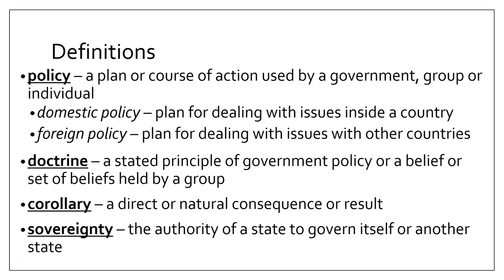The Monroe Doctrine is really going to focus on foreign policy. Doctrine is a stated principle of government policy, or a belief or set of beliefs held by a group — it's kind of the ideas that are behind the policy. A corollary is a direct or natural consequence or result from something else. And sovereignty is the authority of a state to govern itself or another state.